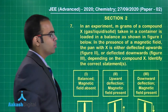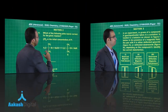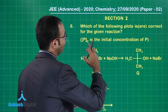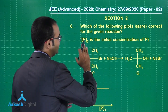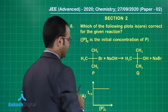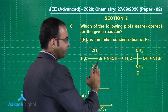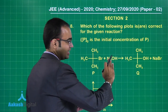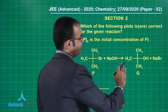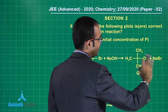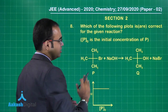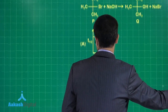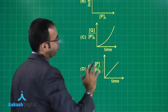Let us move on to question number eight: which among the following plots are correct for the given reaction? P₀ is the initial concentration of P. This is a nucleophilic substitution reaction — tertiary butyl bromide reacting with NaOH giving tertiary butyl alcohol and NaBr. There are four graphs given.